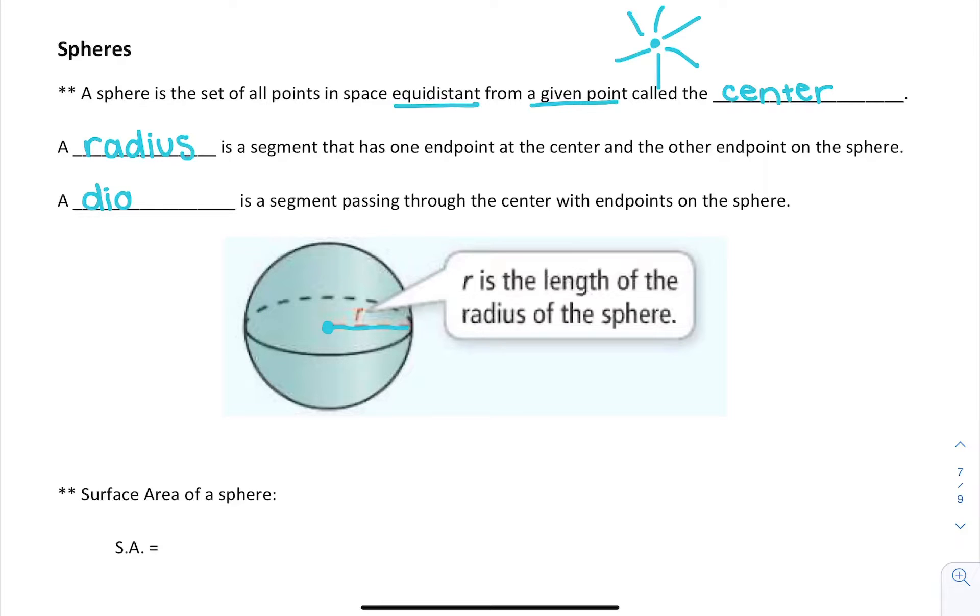Then a diameter is a segment passing through the center with endpoints on the sphere. So if we take two endpoints, pass it through the center, that's going to give us our diameter.